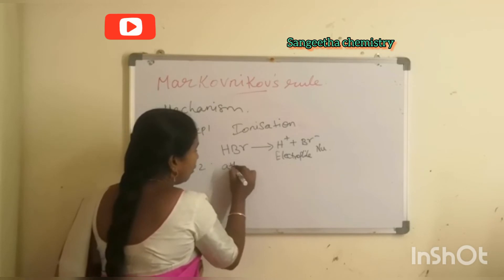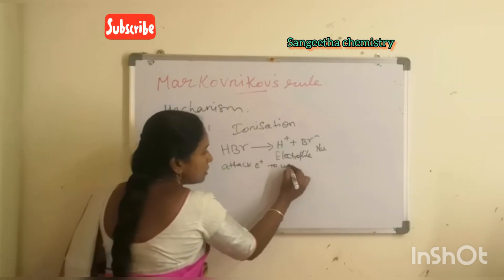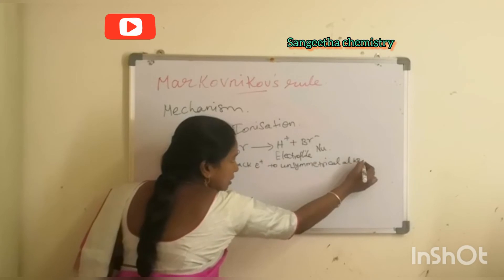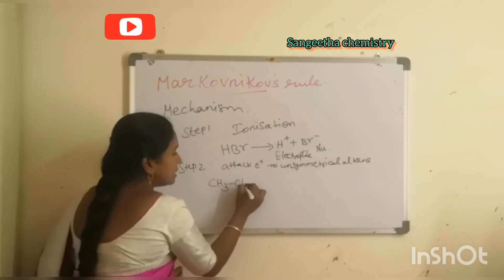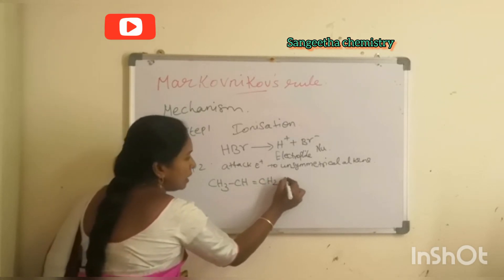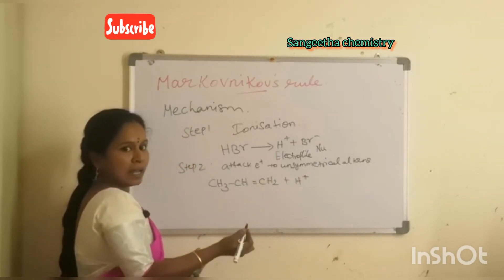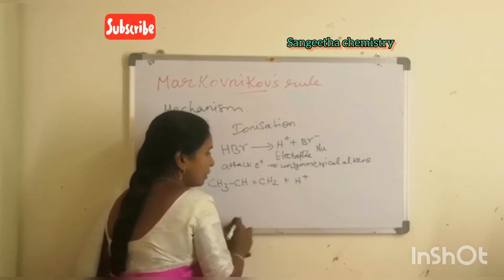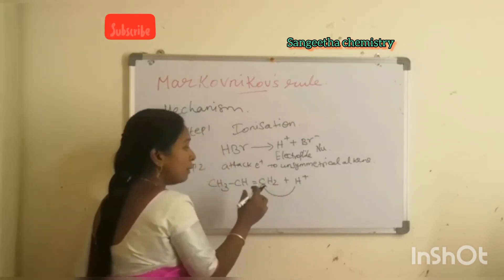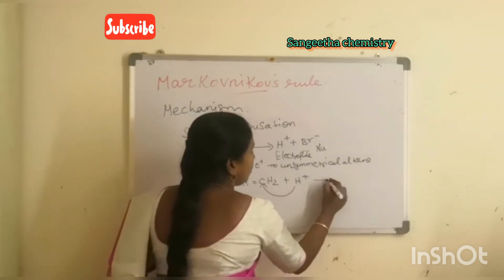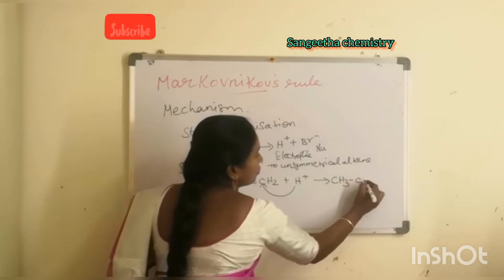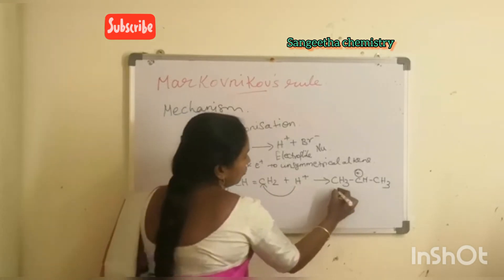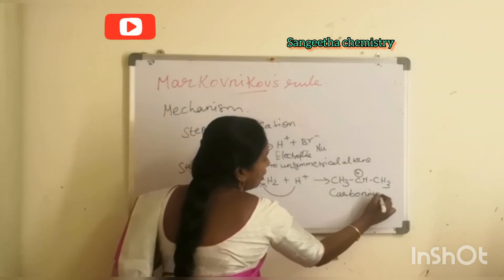Step 2 is the attack of the electrophile to the unsymmetrical alkene. CH3-CH=CH2 reacts with H⁺. The electrophile attacks the double-bond-containing carbon which contains the more number of hydrogen atoms. This creates a positive charge on the adjacent carbon, forming a carbocation (carbonium ion): CH3-CH⁺-CH3.